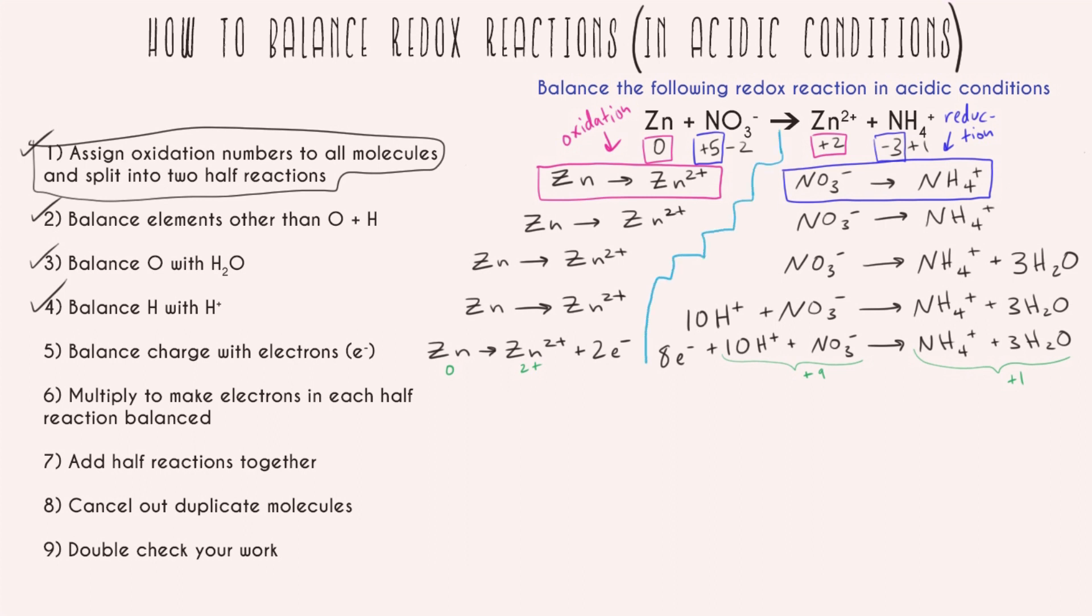So now I have to multiply to make the electrons in each half reaction balanced. I can only add them together if the electrons are balanced. And so that means I have to make my zinc reaction, the one with two electrons, I have to get that up to eight electrons. So that means that everything needs to be times by four. So redrawing that down here. Now my electrons are equal on both of my half reactions.